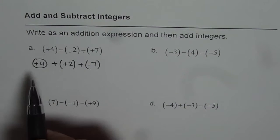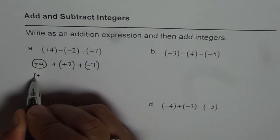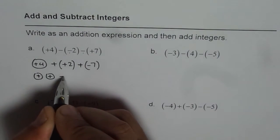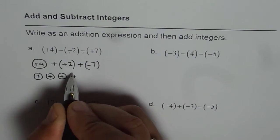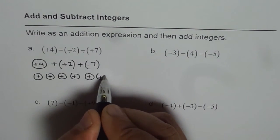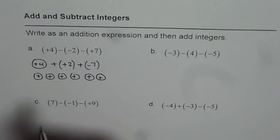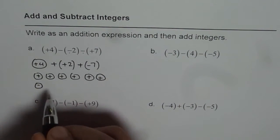Now once you do that, then you can show your counters. Plus four means plus four, four positive counters. Plus two means plus two counters, two positive counters. Plus of minus seven means seven negative counters. Let us make negative counters.